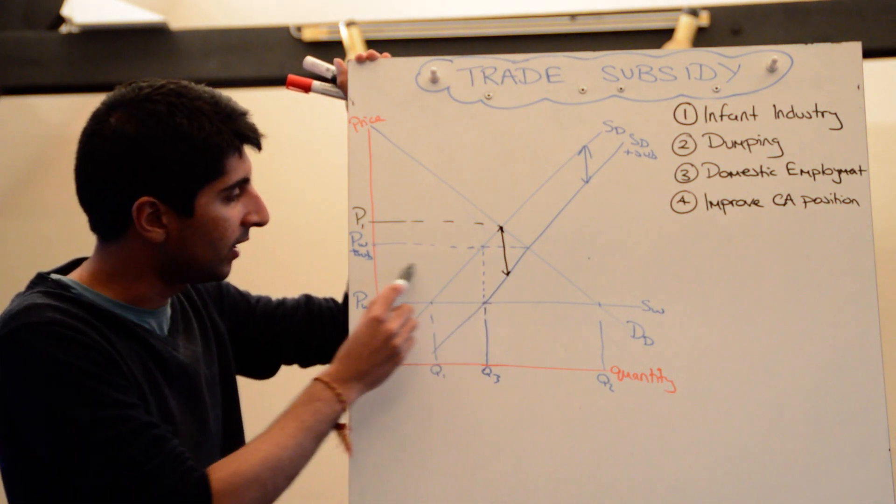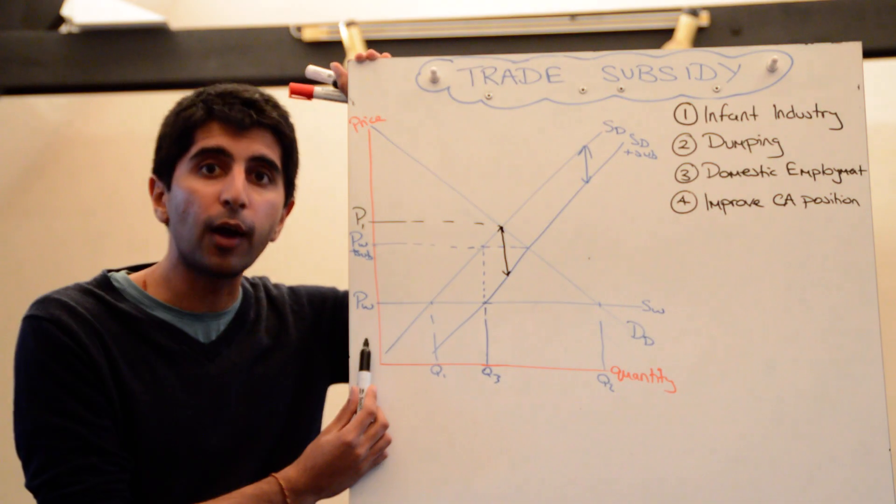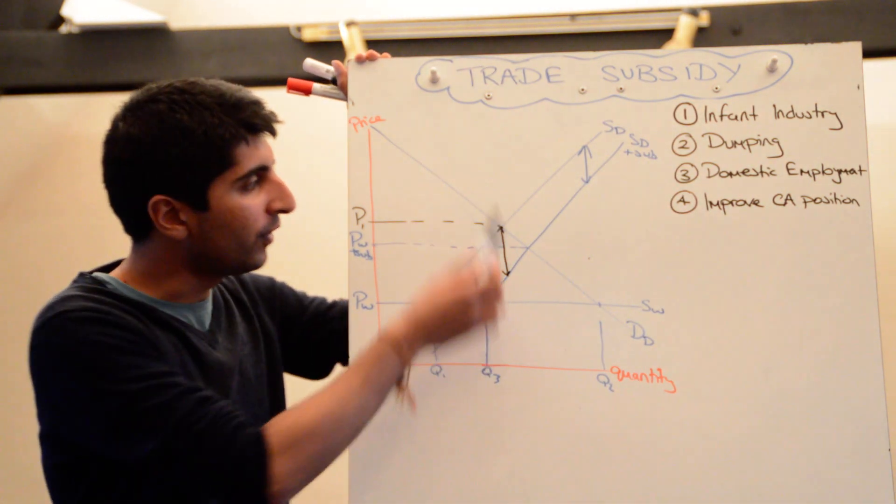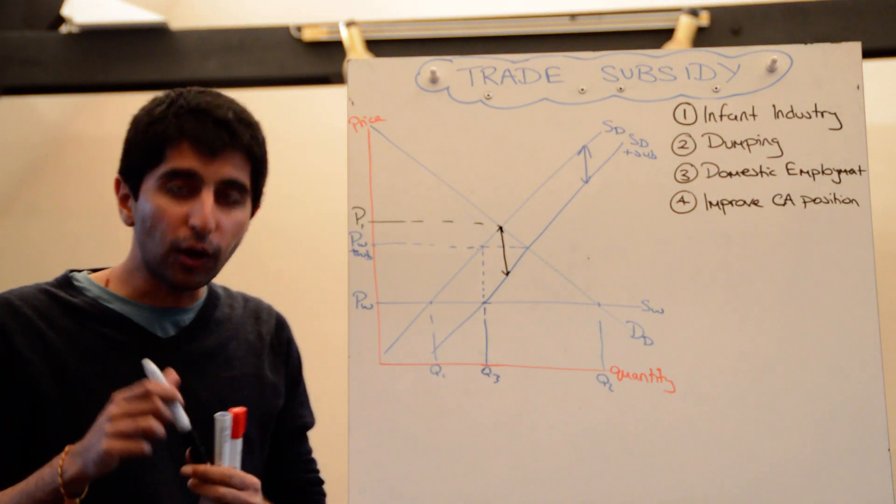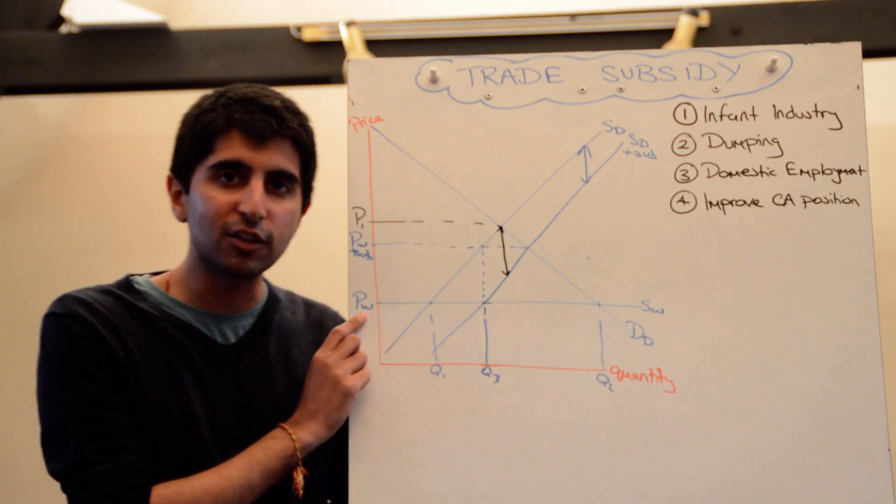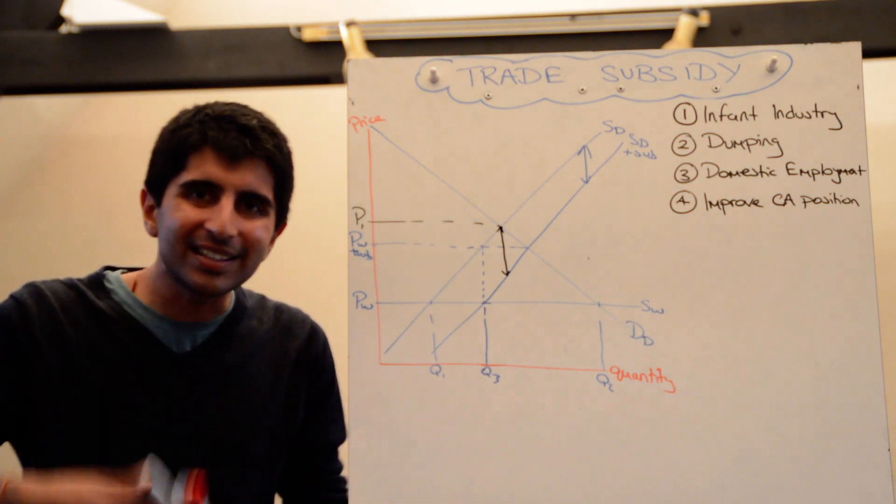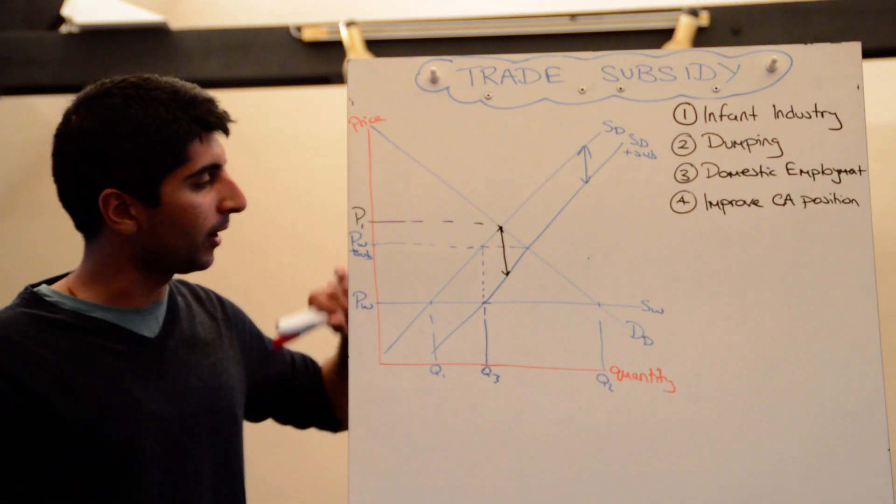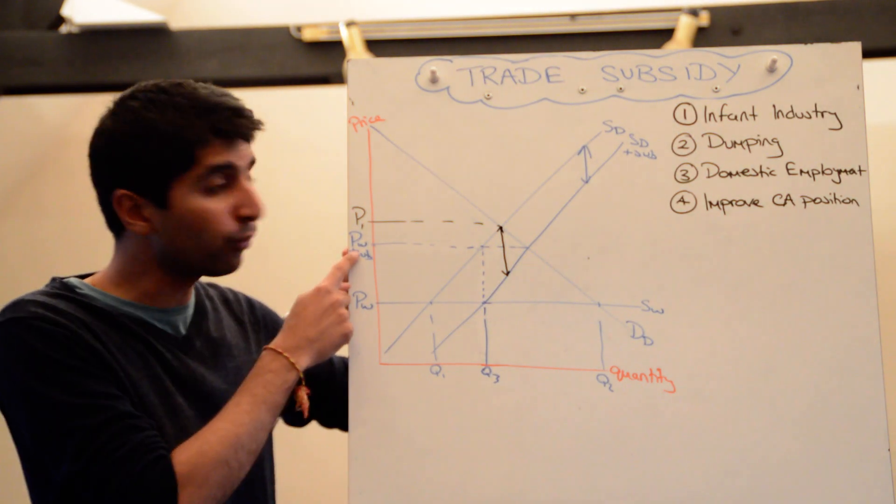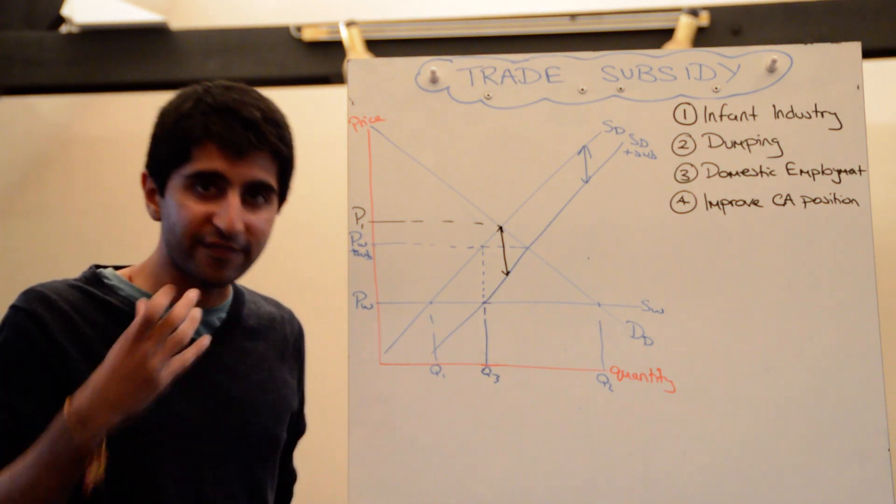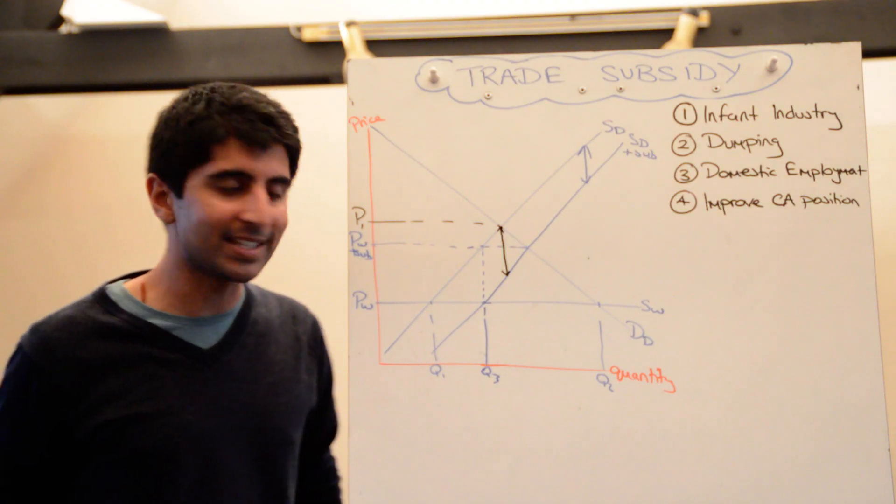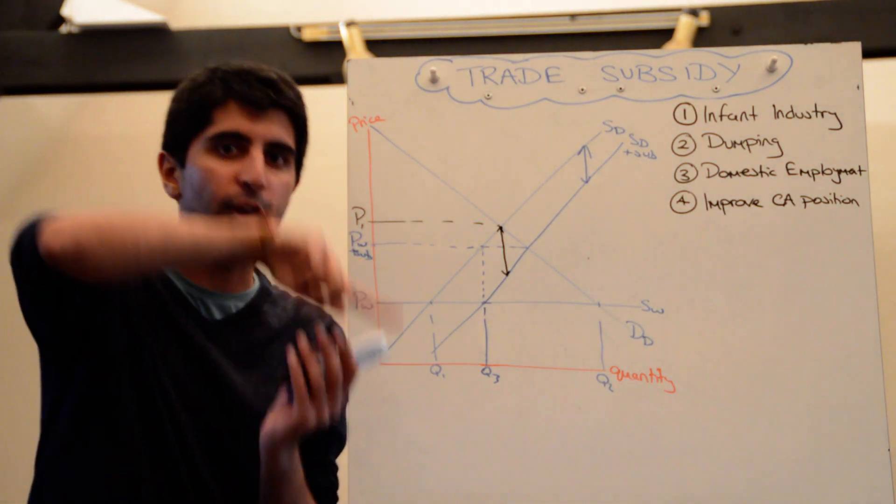And you see that's not below the world price at all. So this subsidy, we assume, is not large enough for it to change the world price, but effectively, it gives domestic suppliers a higher price. It's not the real price in the market, it's just the effective price that domestic suppliers are getting, PW with the subsidy on top.